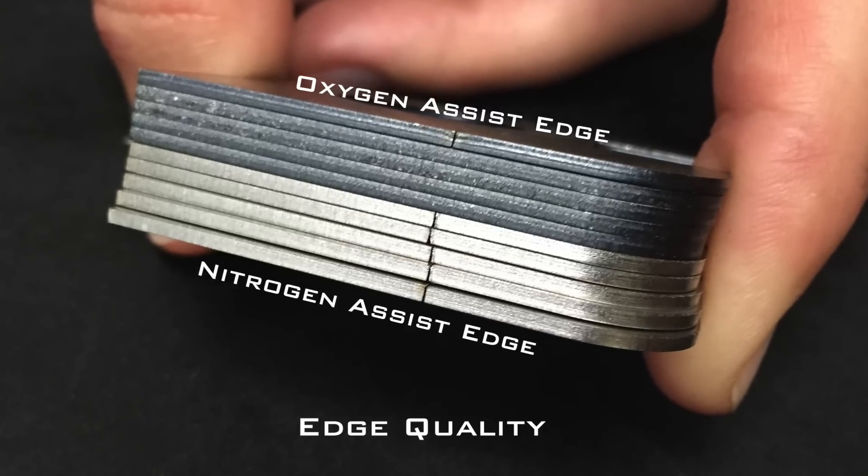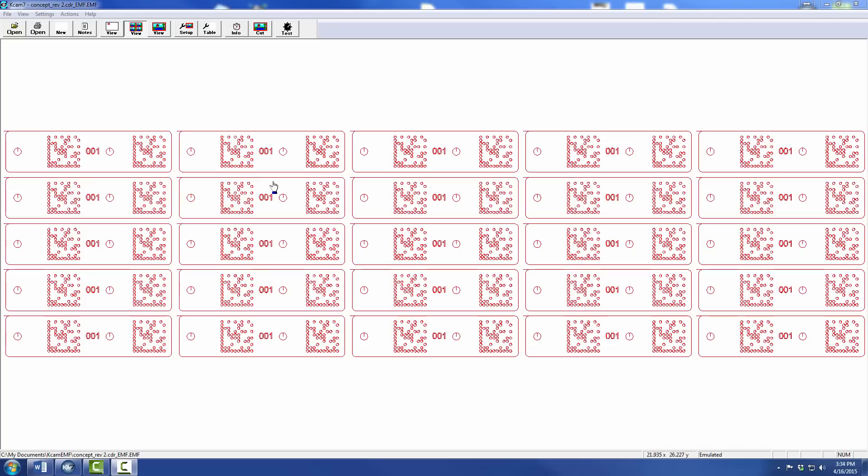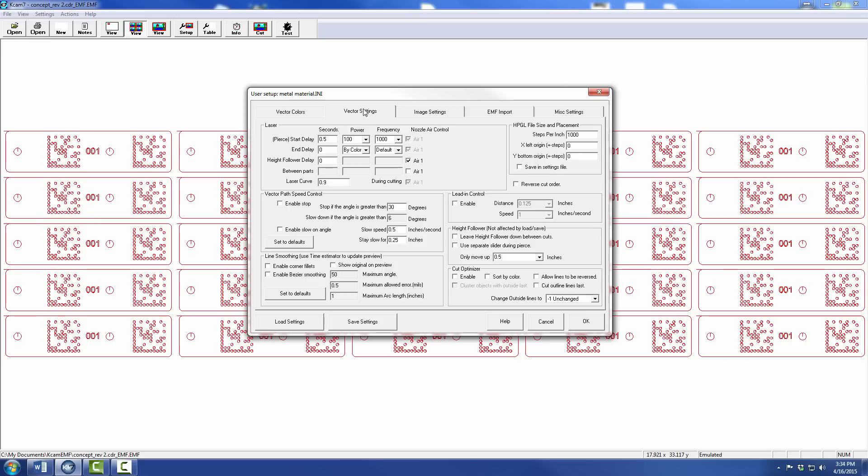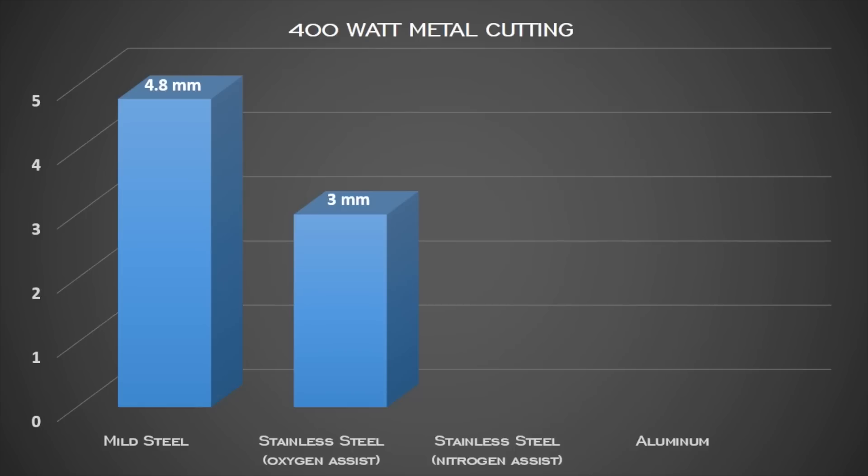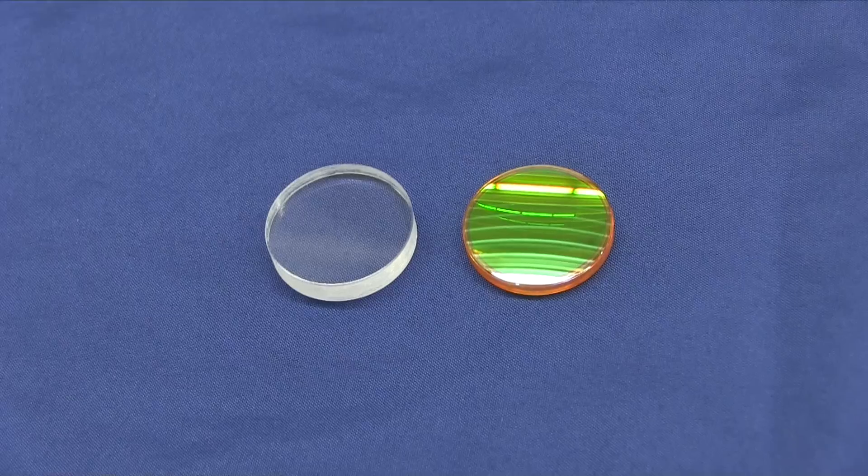An assist gas such as oxygen or nitrogen is injected through the metal cutting nozzle, resulting in a dross-free cut edge requiring little or no deburring. The K-Cam software allows users to adjust pierce dwell, tool offset, and nozzle air pressure. Our largest 400-watt laser can cut up to 4.8 millimeter mild steel, 3 millimeter stainless steel with oxygen assist, 2 millimeter stainless steel with nitrogen assist, and up to 1.5 millimeter aluminum.